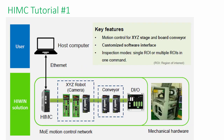Let's look at the topology. The user can control the HIMC via an Ethernet cable at the upper layer. Then the HIMC can perform real-time motion control on the axes. In the example, the HIMC controls the XYZ stage and board conveyor to do multiple ROI in one command.